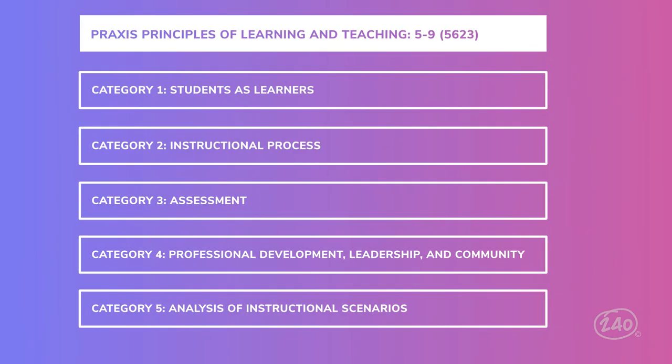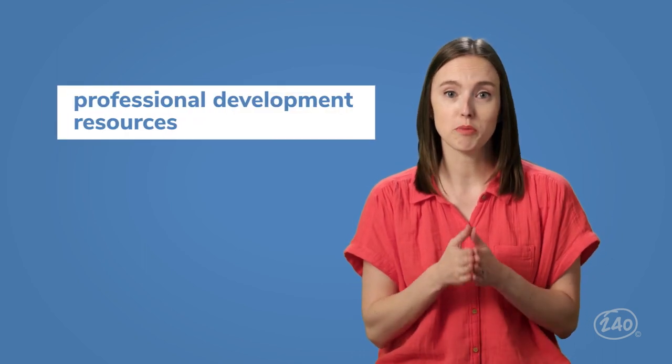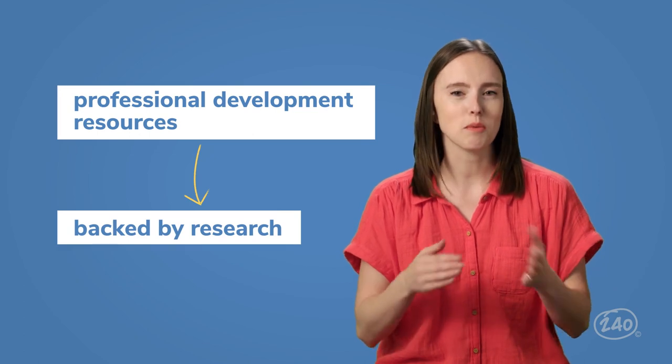Category 4 covers Professional Development, Leadership, and Community, and is worth the same 15% of your overall score as Category 3. Here, you'll need to know about collaboration with other professionals and students' families. You'll also see questions about improving your practice as a teacher, including specific vocabulary related to professional development. One term to watch for is 'academic journal' — while teaching blogs and online educator communities are great, resources for professional development should be backed by research. That's why academic journals are preferred.